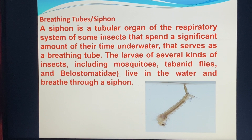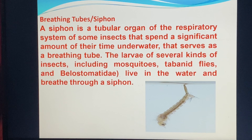Breathing tubes or siphons: a siphon is a tubular organ of the respiratory system of some insects that spend a significant amount of their time underwater. They are shaped as breathing tubes. The larvae of several kinds of insects, including mosquitoes and tavernite flies, breathe through a siphon.